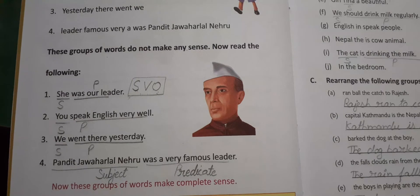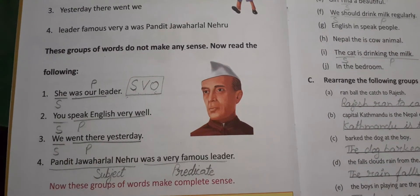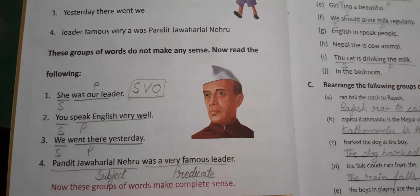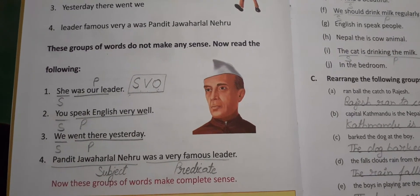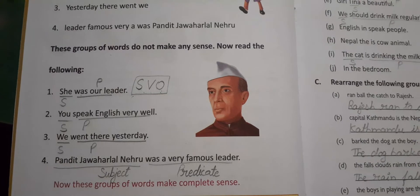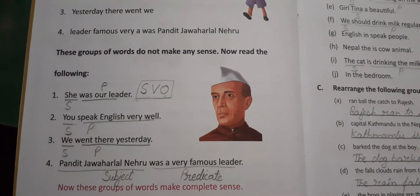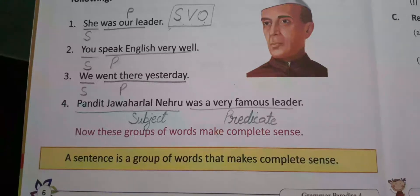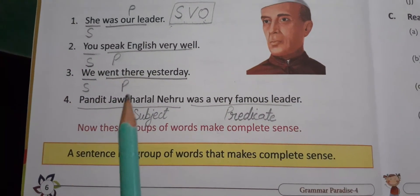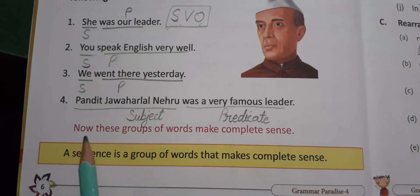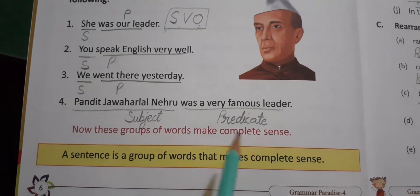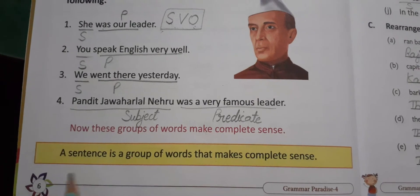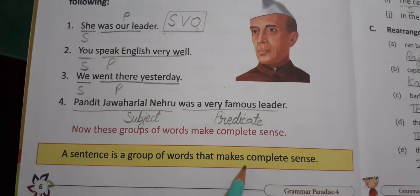And one more thing — one point you have to remember, students. Whenever we are writing a sentence, it always follows the rule of subject-verb agreement. That means when we talk about a sentence, subject-verb-object is required. This rule will help us to rearrange the sentences if a jumbled word is given. The other sentences are providing the complete sense. Now, these groups of words make complete sense. A sentence is a group of words that makes complete sense.